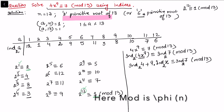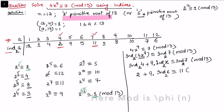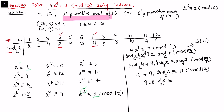From our chart, index of 4 is 2 and index of 7 is 11. Note that once we apply the index congruence, the modulus becomes phi(n), which is mod 12. So we have: 2 plus 9 times index of x with respect to 2 congruent to 11 mod 12. This gives 9 times index of x congruent to 9 mod 12. Cancelling 9 on both sides and adjusting the modulus by gcd(9,12)=3, we get index of x with respect to 2 congruent to 1 mod 4.